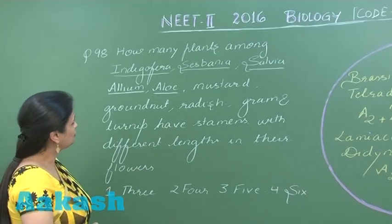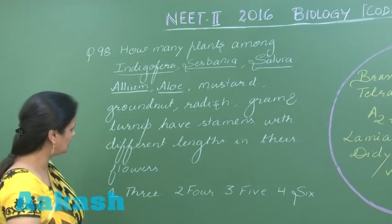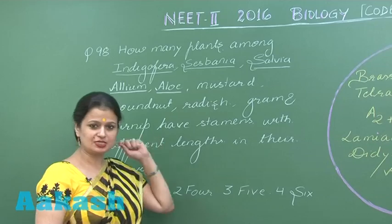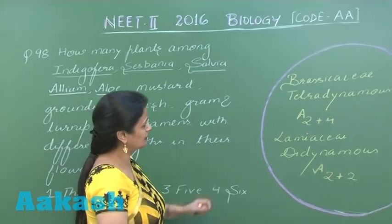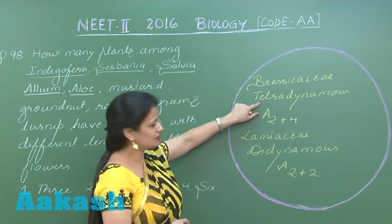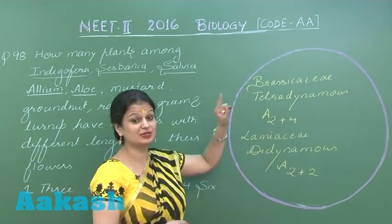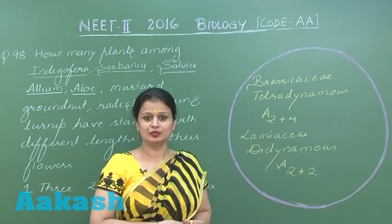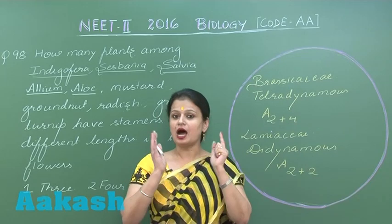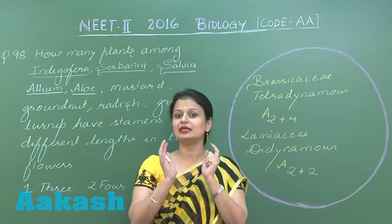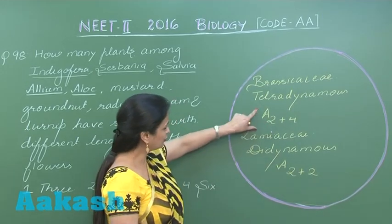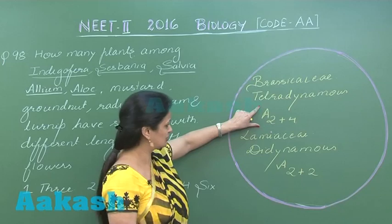In question number 98, we have to look for the plants in which the stamens have different lengths. Such a condition is present in two families: Brassicaceae and Lamiaceae. In the Brassicaceae family, there is the tetradynamous condition — there are six stamens, where the outer two are small and the inner four are large, represented as A2+4.